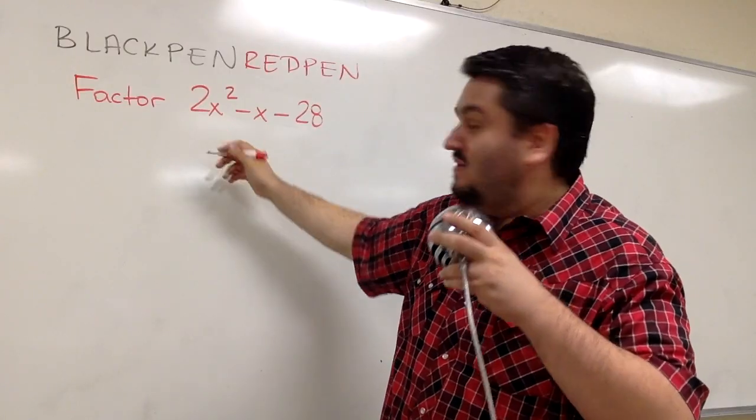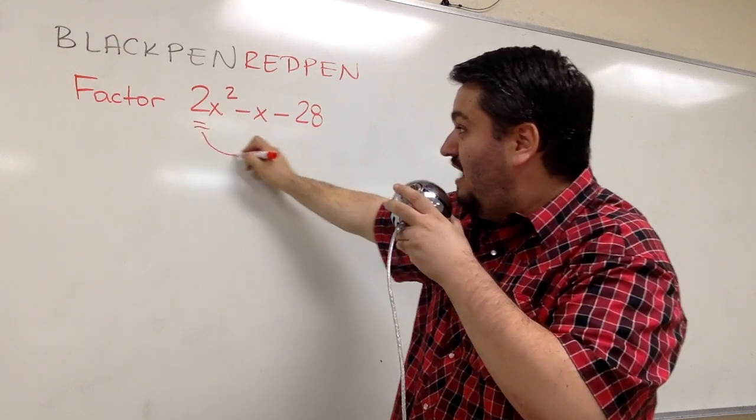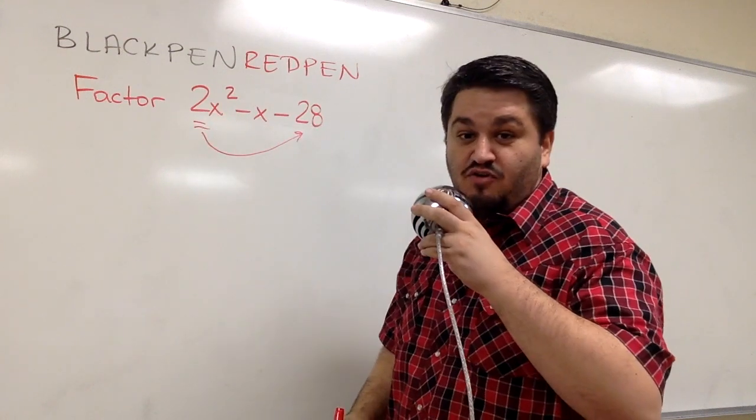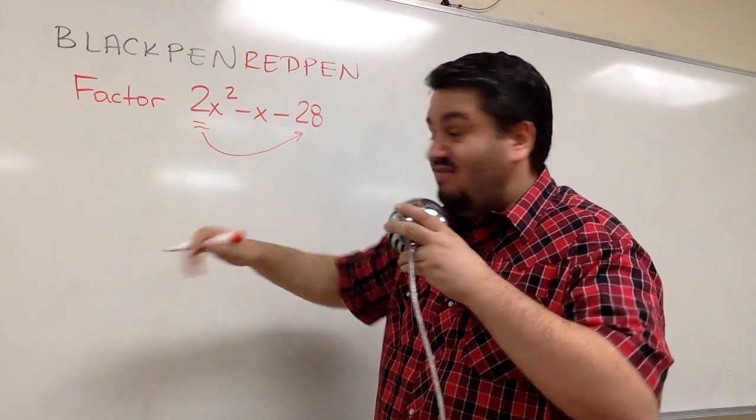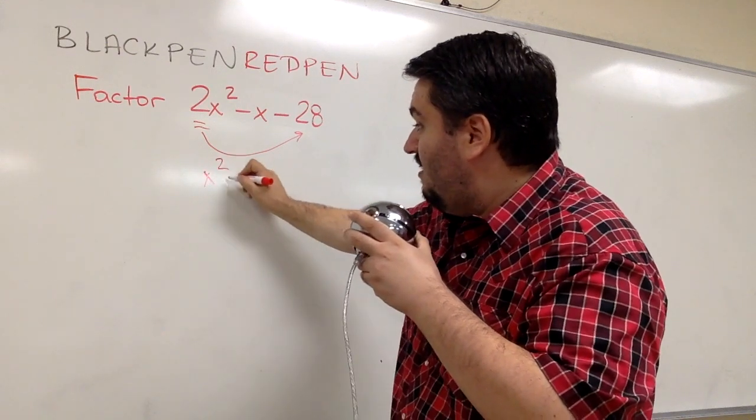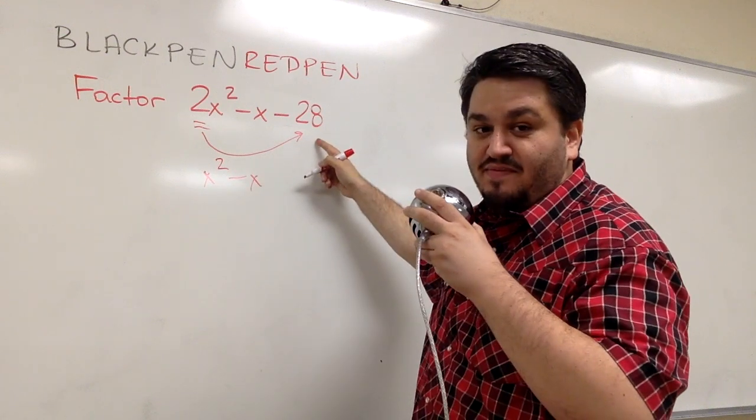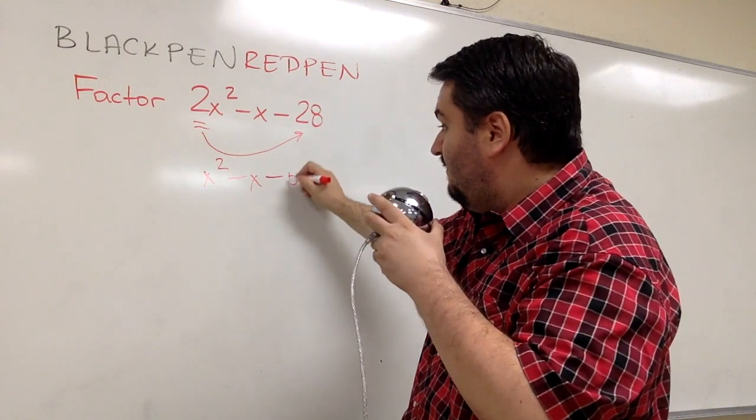Start with the coefficient a, take that coefficient, and multiply by your c, your constant term. Then rewrite the expression with a gone, so this is just x squared, and the c term now becomes a times c. 28 times 2, that's 56.